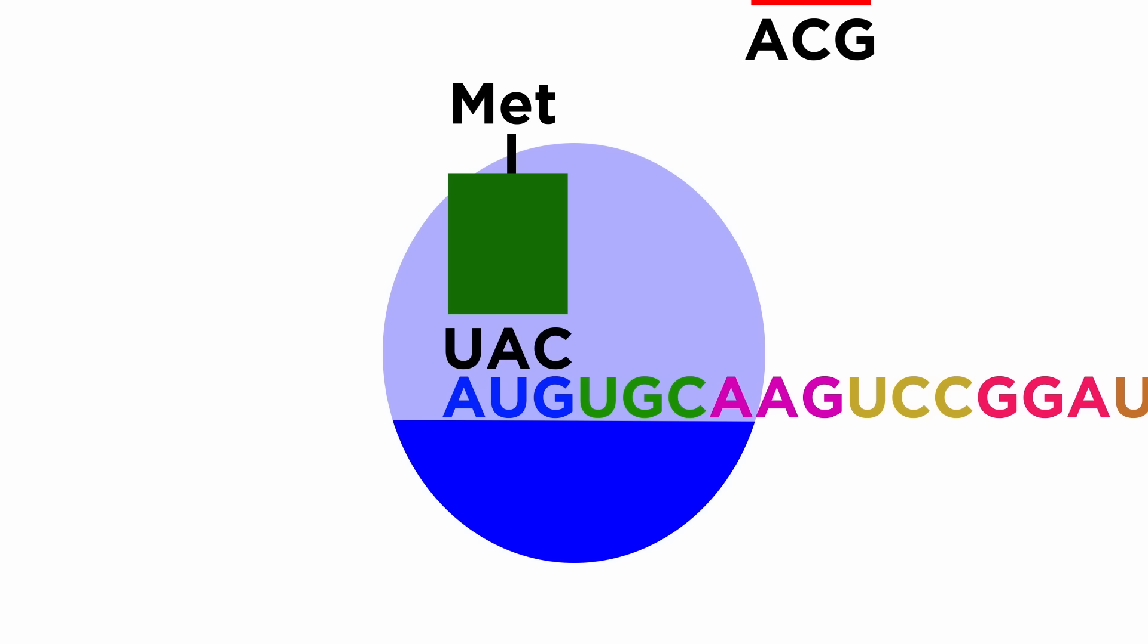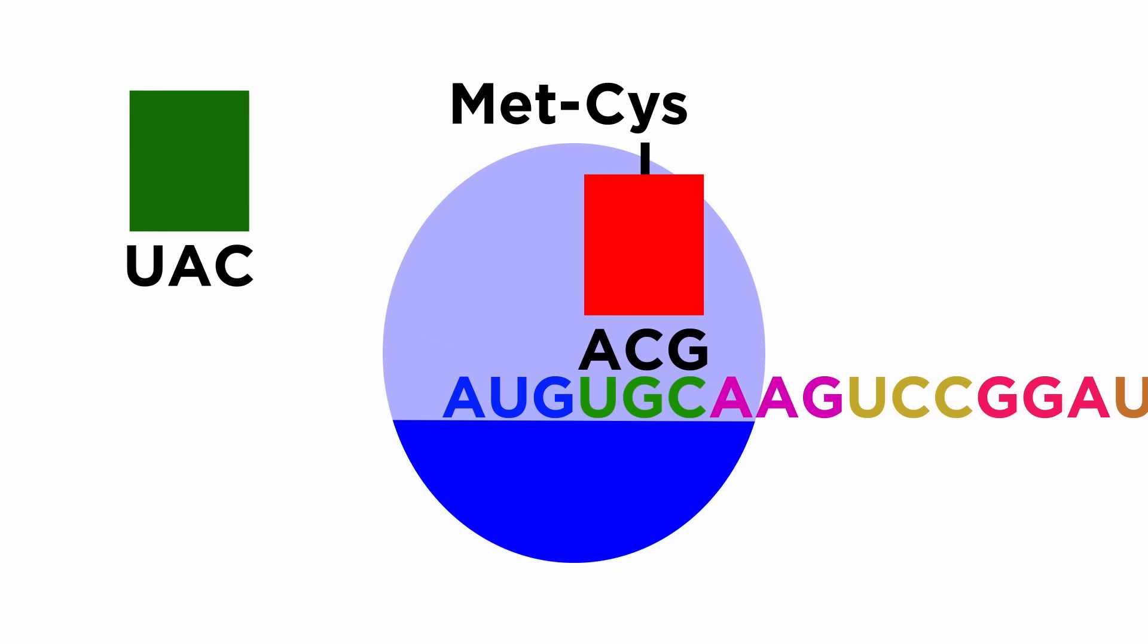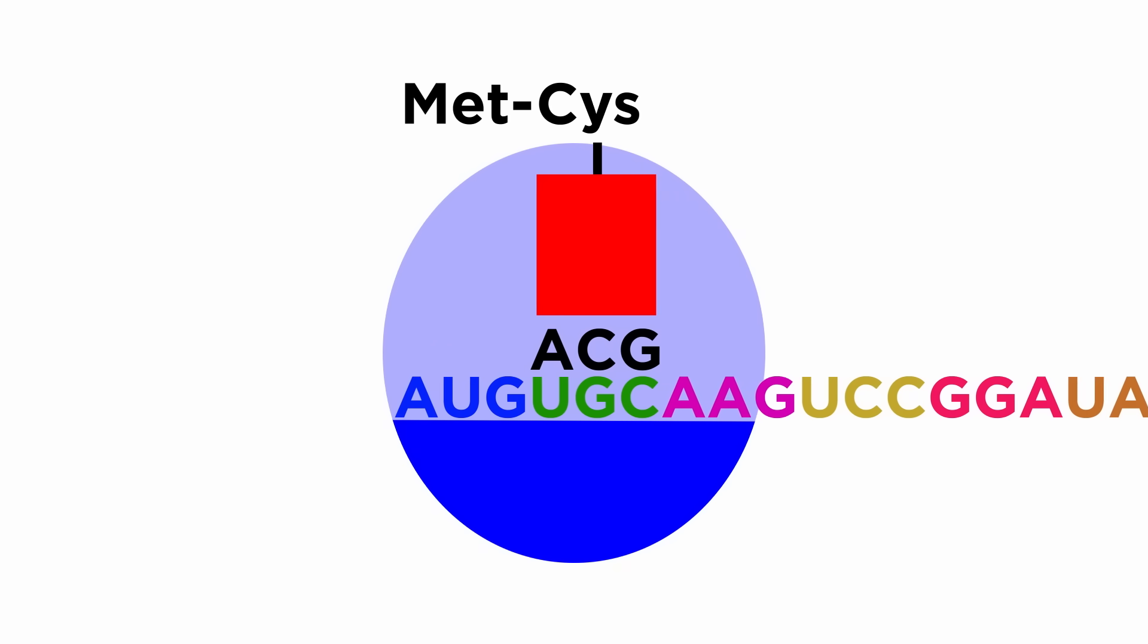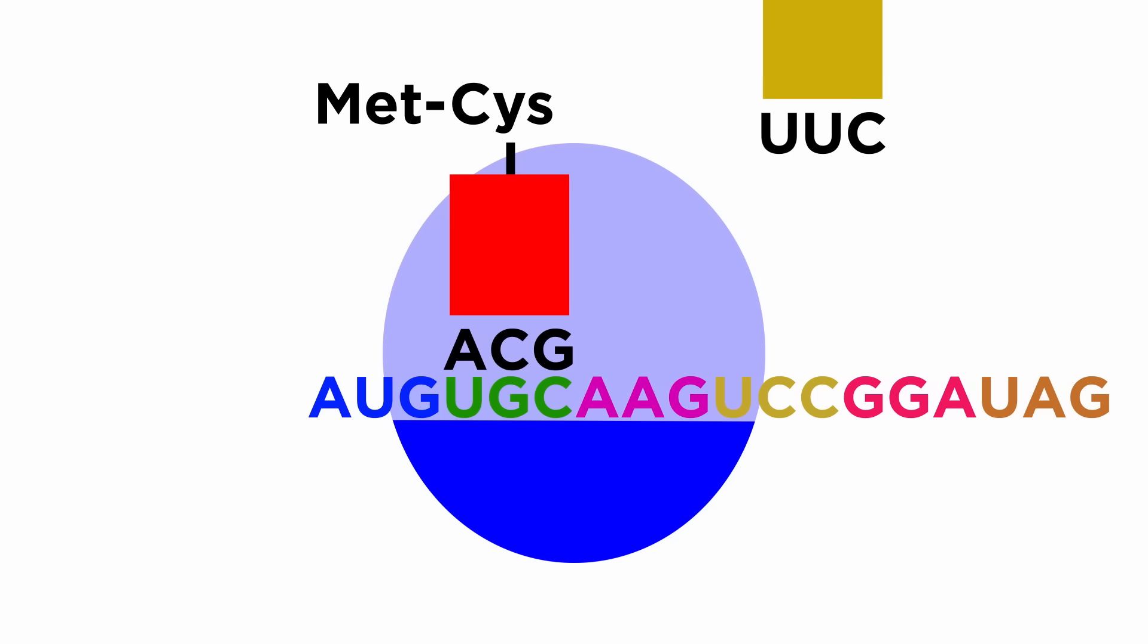Then the tRNA that corresponds to the next codon after the start codon will enter the ribosome. This will carry with it an amino acid, which becomes covalently bound to the methionine from the initiator tRNA. The first tRNA detaches and leaves the ribosome, which has shifted over, making room for the next tRNA.